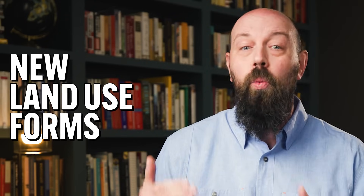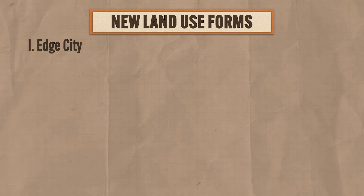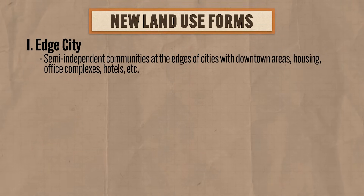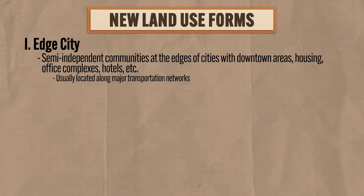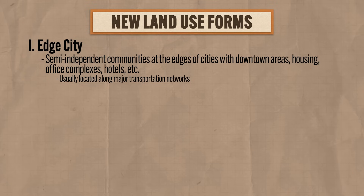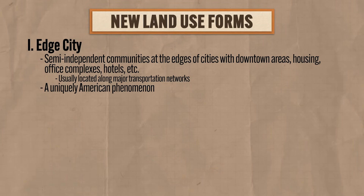Now you can see the trend in urban growth and its effects on the spatial arrangement of cities. I have the pleasure of introducing you to three new land-use forms that have arisen in the wake of increasing urbanization. First is the edge city, which refers to semi-independent communities at the edges of cities with downtown areas, housing, office complexes, hotels, etc. These are usually located among major transportation networks, so they're not entirely dependent on the city but serve as a smaller node related to the city. The edge city is a uniquely American phenomenon, and edge cities are pretty much self-sustaining. Early suburbs were just for residential housing and suburban people still worked and shopped in the city. In the 1960s, more and more shopping moved into the suburbs, and then in the 80s and 90s, a lot more jobs moved out into the suburbs as well, thus creating the edge city.